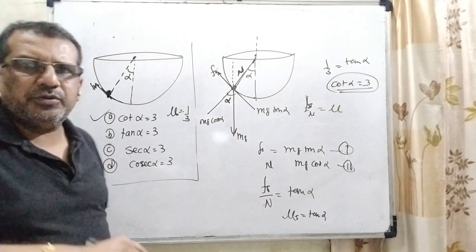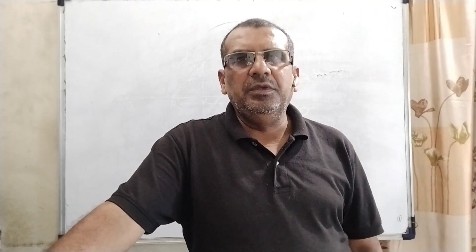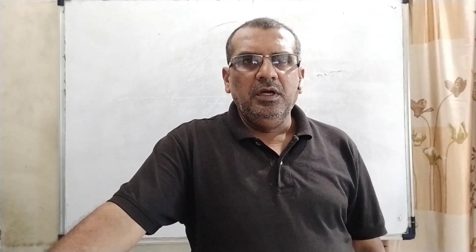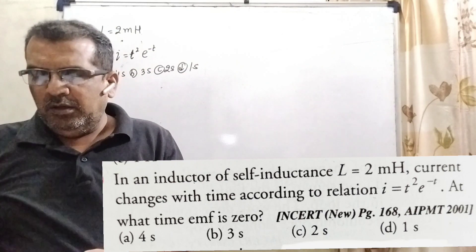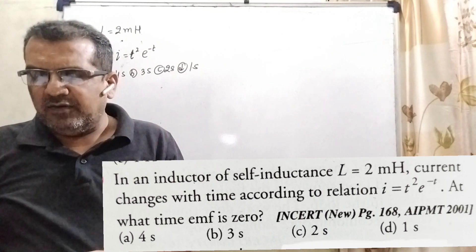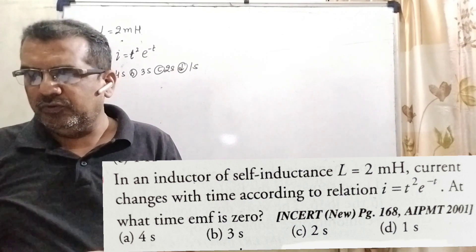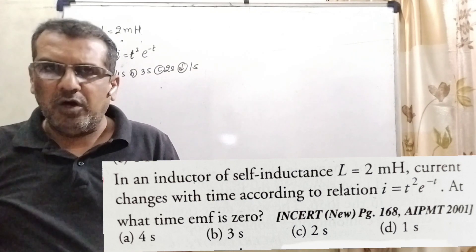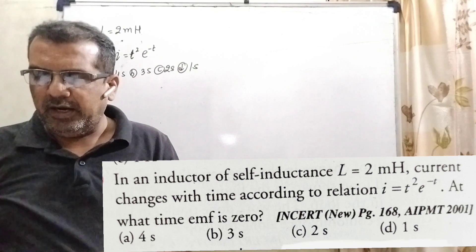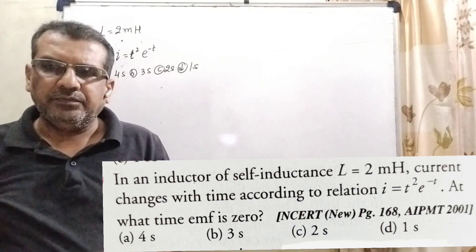So the correct answer is Option A. I hope you understood this question. Now here is the next question. In an inductor of self-inductance L equal to 2 mH, current changes with time according to the relation I equal to t squared e raised to power minus t. At what time is the EMF zero? We have four options: Option A — 4 seconds; Option B — 3 seconds; Option C — 2 seconds; Option D — 1 second. This question was asked in IPMT 2001 and also in NCERT.